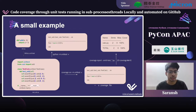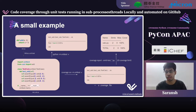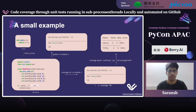Another useful command is 'coverage html', which generates almost a website for your whole Python code, showing where coverage is going down and where it's complete. That's useful for visualization, but we'll be using Codecov so we won't need that command.